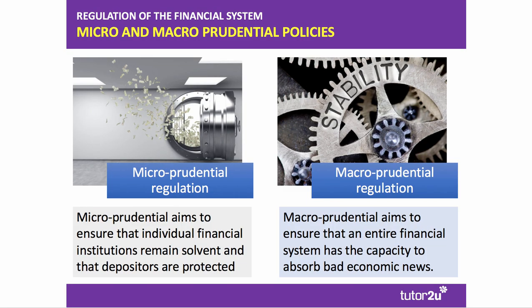Just before we look at some examples, it's important to make a distinction between different types of regulation in financial markets. Micro-prudential regulation looks at individual financial institutions — banks, payday lenders, insurance companies and so on — and tries to ensure they remain solvent and that the people who make deposits with them, savers, are protected. That's micro-prudential regulation.